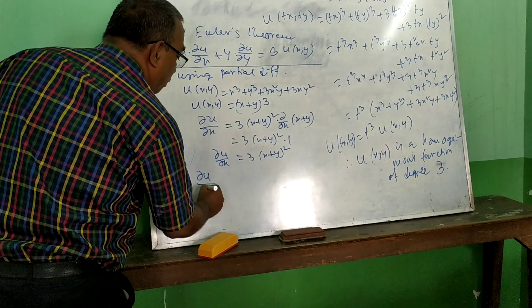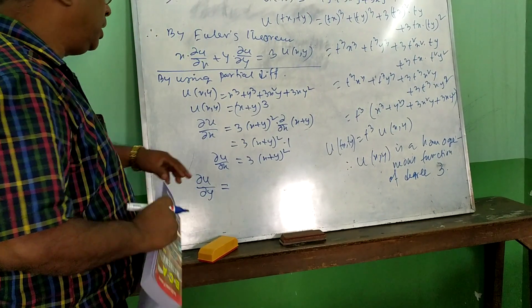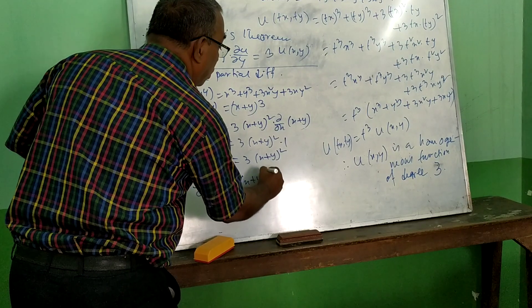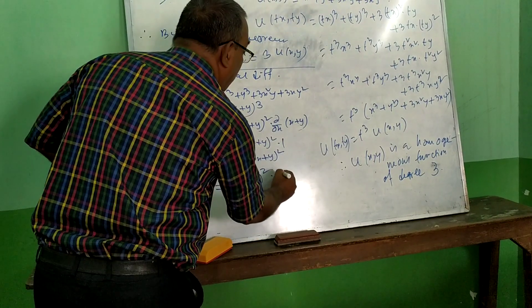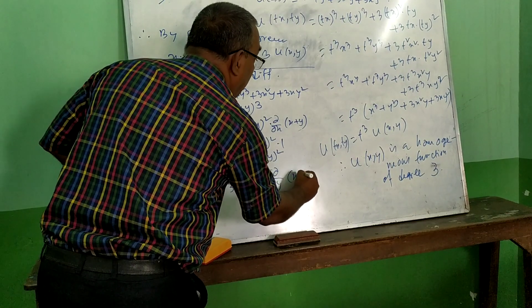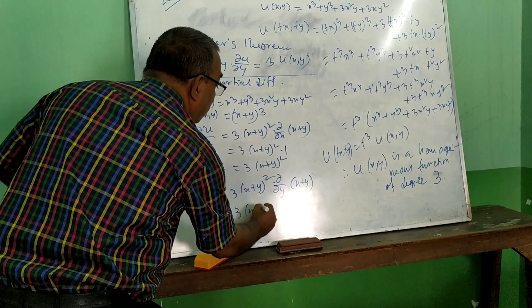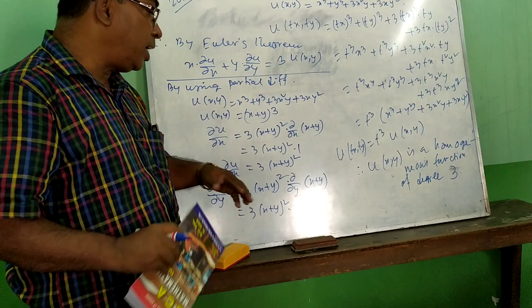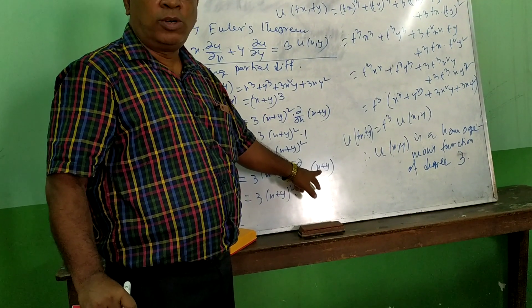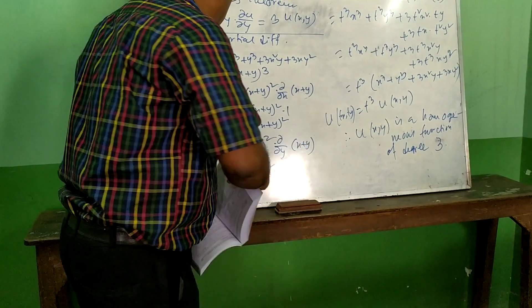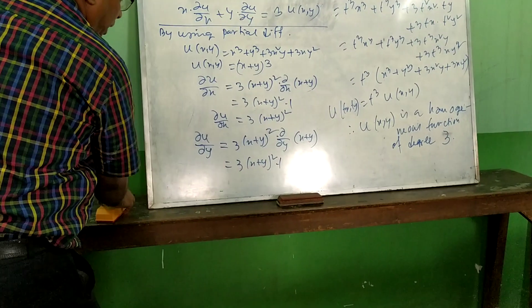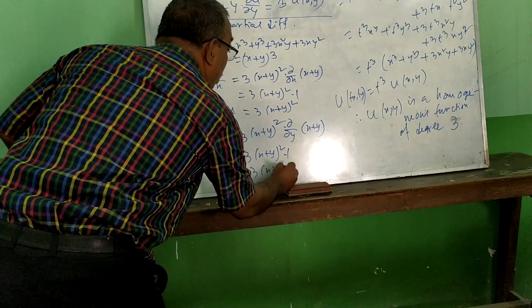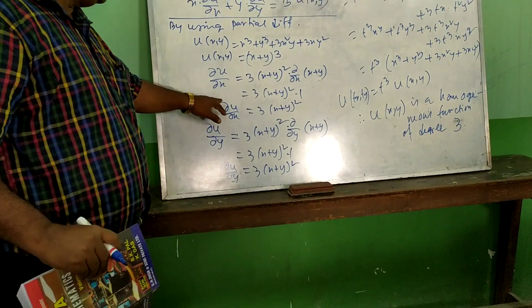Now ∂u/∂y: differentiating with respect to y, 3 will come out as (x+y)², then multiplied by ∂/∂y of (x+y). Since ∂/∂y of x is 0 (x is constant with respect to y) and ∂/∂y of y is 1, therefore ∂u/∂y = 3(x+y)².